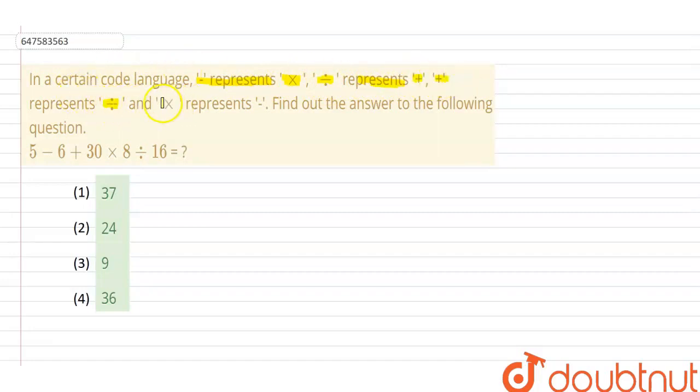Divide and multiply represent minus. Find out the answer for the following question. So guys, this is an equation: 5 minus 6 plus 30 into 8 divided by 16. And we will find out how to solve it. When the sign is given, the symbol is given, it will change. So let's see.